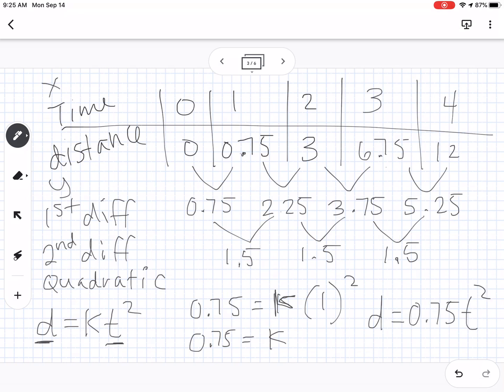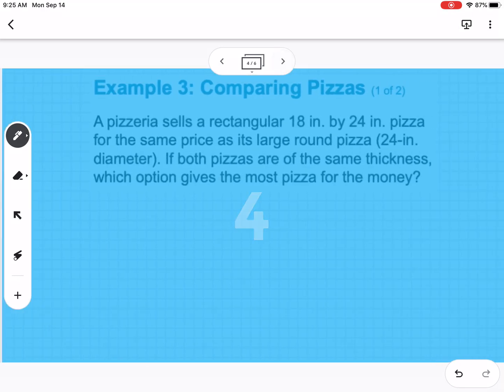So again, constant first difference means they're linear, constant second difference means it's quadratic, and constant ratio means it's exponential.